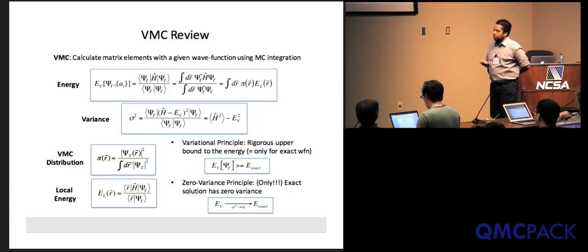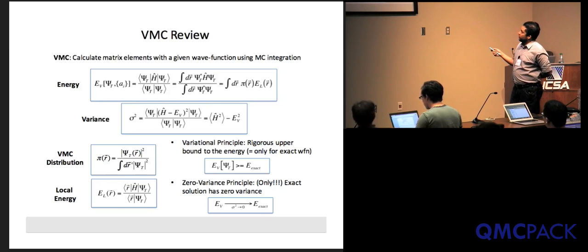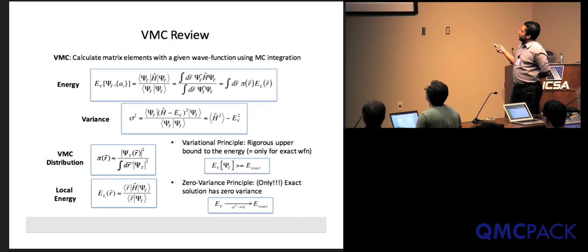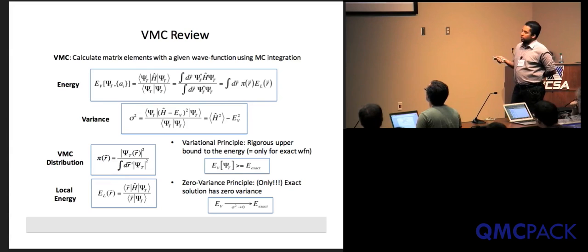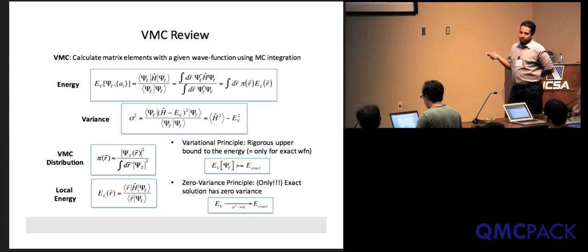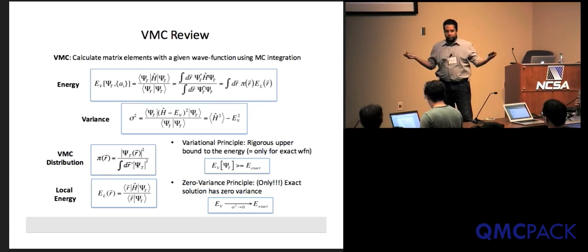VMC is typically done in real space, although it can be done in other forms. We turn the matrix element into a big integral. You can convince yourself that any matrix element like this can be written in a specific form for the energy. Effectively, you have a distribution defined by the square modulus of your trial wave function normalized, and then the local energy, which is what you average over this distribution to get your variational energy.